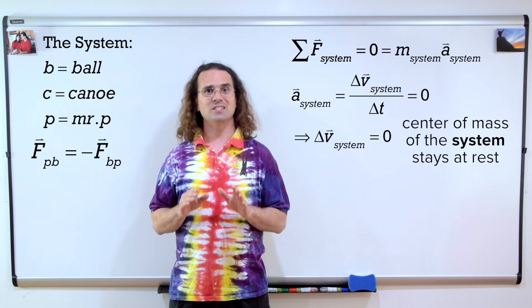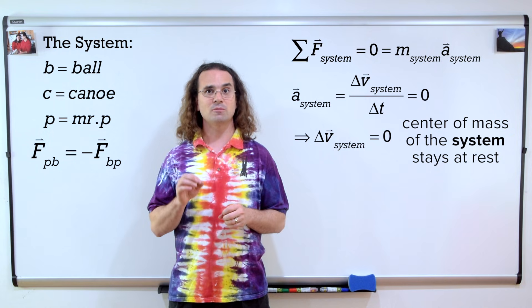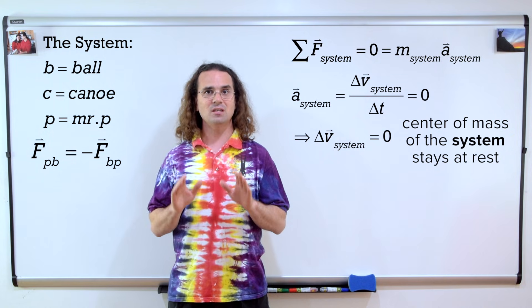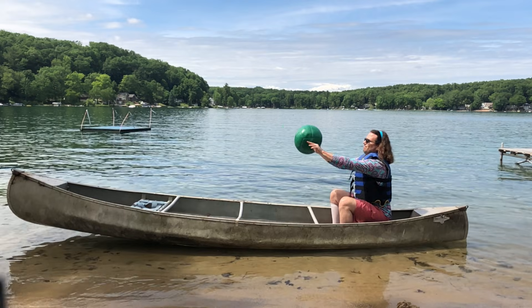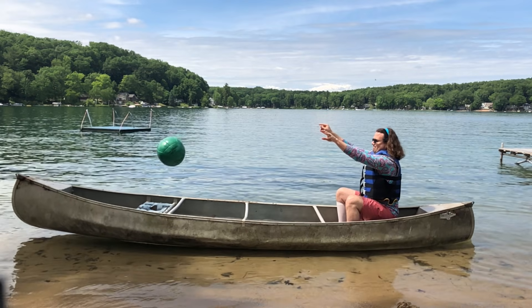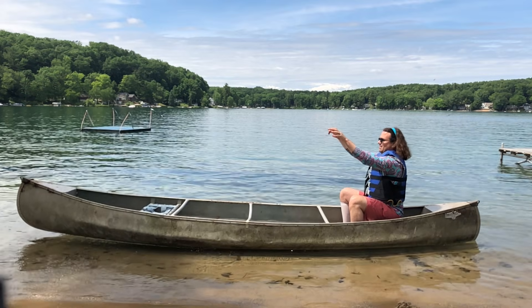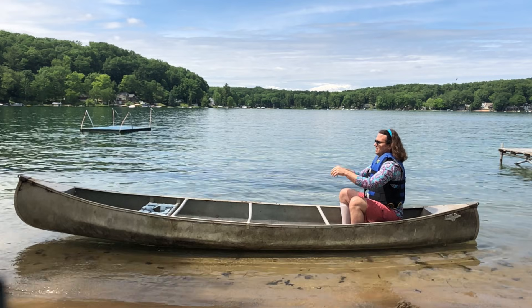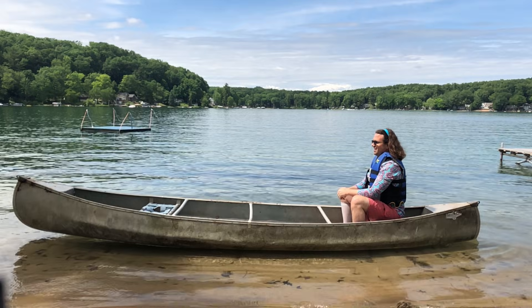Because the center of mass of the system does not move relative to planet Earth, as the ball moves to the left, everything else in the system must move to the right in order to keep the center of mass in the same location relative to planet Earth. I get that. But why does everything stop when the ball lands in the boat? That is because the boat stops the ball from moving to the left. If the canoe and Mr. P kept moving to the right, the center of mass of the system would move to the right. There is still zero net external force acting on the system, so the center of mass needs to stay at rest, so the canoe and Mr. P have to stop moving to the right.